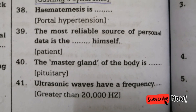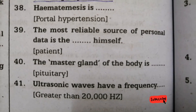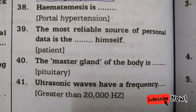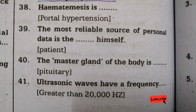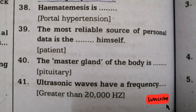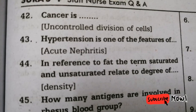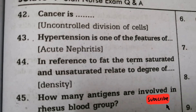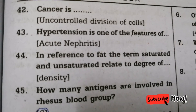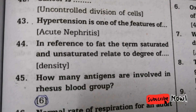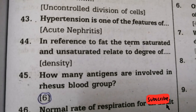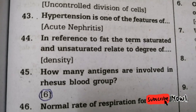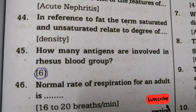Fortieth question: the master gland of the body — answer is pituitary. Next question: ultrasonic waves have a frequency of — answer is greater than 20,000 hertz. Next question: cancer is — answer is uncontrolled division of cells. Next question: hypertension is one of the features of — answer is acute nephritis. In reference to fat, the terms saturated and unsaturated relate to the degree of — answer is density.